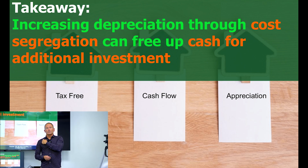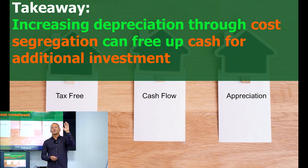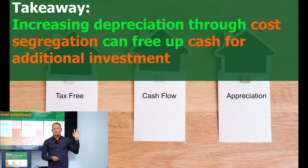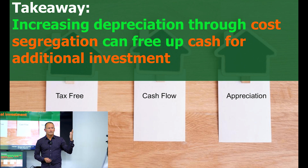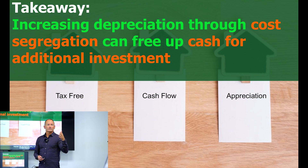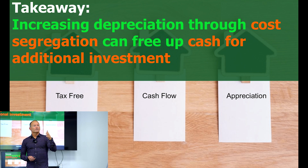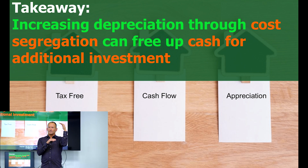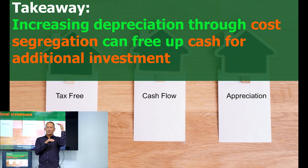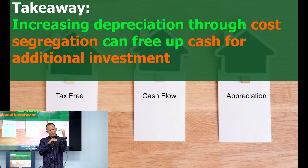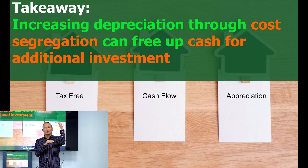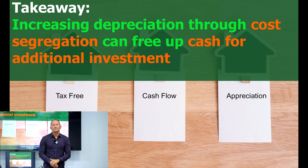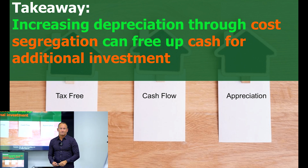Now, is there a way to buy a property and never pay tax on the gain? Only if you don't sell it — you will it to your kids. When you will it to somebody, the tax law allows a step-up in basis to market value. So if we bought a $10 million property, did a cost seg, and held it until our basis is down to about $6 million, then we pass away and give it to our kids — the tax law says the property is worth $12 million, so the kids get it at $12 million and never pay tax on it if they sell.